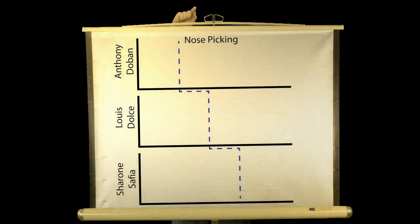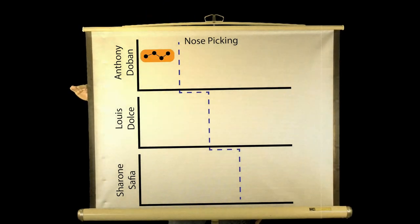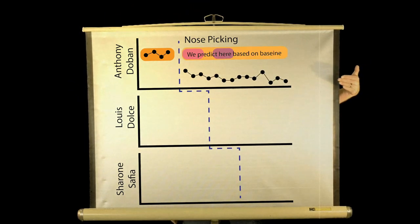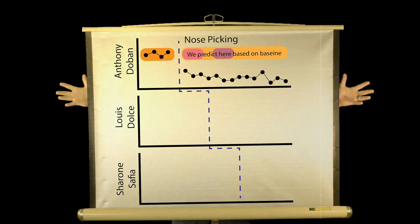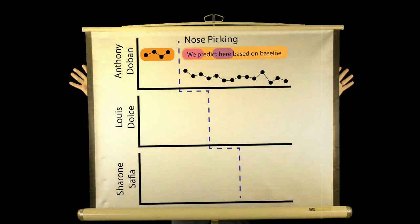So, nose picking is a good behavior. We're going to watch nose picking behavior. We're going to find out how many times somebody puts their fingers in there and starts digging. We've got a particular pattern of responding for the first baseline. We start our intervention, and then we have the pattern of responding after the intervention. But we have established a little bit of prediction.